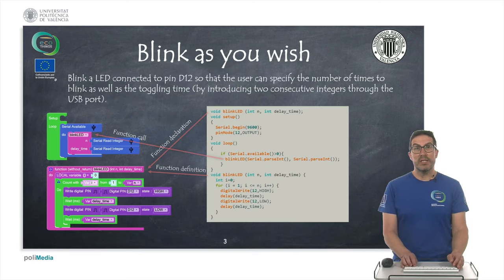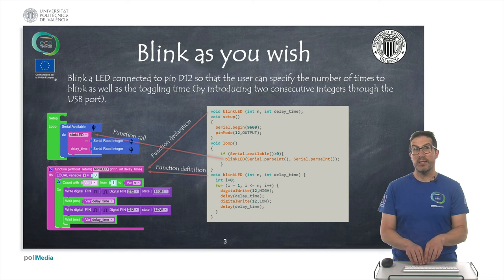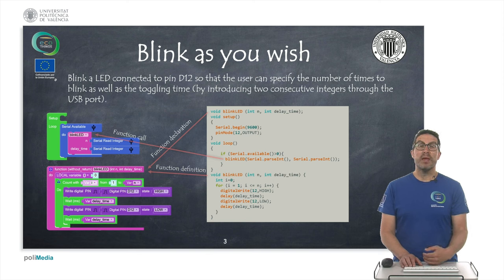In this case we want to blink an LED so that the user specifies with two numbers by typing them on the USB console. By typing these two numbers we want to specify the amount of time that the LED should blink and also the delay time or the toggle time between each period of the LED.